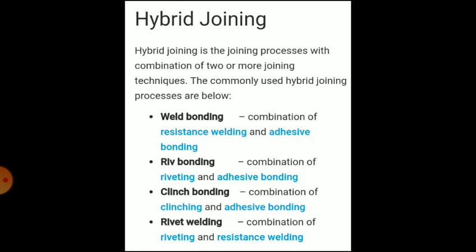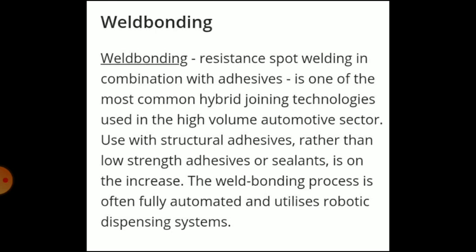Hybrid joining involves the combination of two or more joining techniques. Commonly used hybrid joining processes include: weld bonding (combination of resistance welding and adhesive bonding), rivet bonding (combination of riveting and adhesive bonding), clinch bonding (combination of clinching and adhesive bonding), and rivet welding (combination of riveting and resistance welding). Resistance spot welding in combination with adhesives is one of the most common hybrid joining technologies used in the high-volume automotive sector.